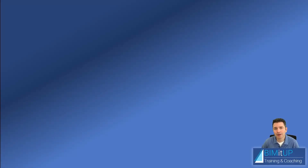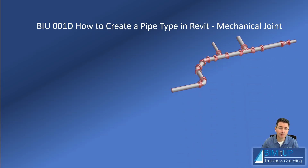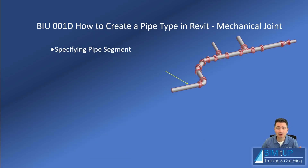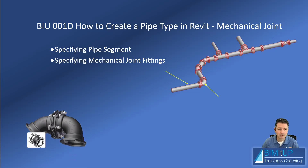Hi everyone, Alex with Beam It Up here. Today I'm going to show you how to create a mechanical joint pipe type using Revit MEP, so you can do something that looks like that. First thing we're going to do is specify our pipe segment, then we're going to specify our mechanical joint fittings. This would be an example of a mechanical joint elbow.